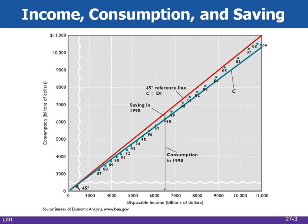This figure shows consumption and disposable income for the U.S. from 1987 to 2009. Each dot shows consumption and disposable income in a specific year. The line C, which generalizes the relationship between consumption and disposable income, indicates a direct relationship and shows that households consume most of their after-tax incomes. A 45-degree line represents all points where consumer spending equals disposable income. If the actual graph is below the 45-degree line, the difference represents the amount of income saved. Consumption can exceed disposable income and personal savings can be negative.